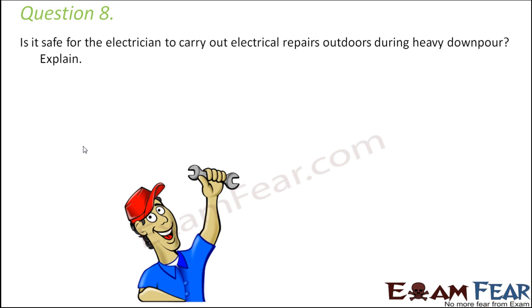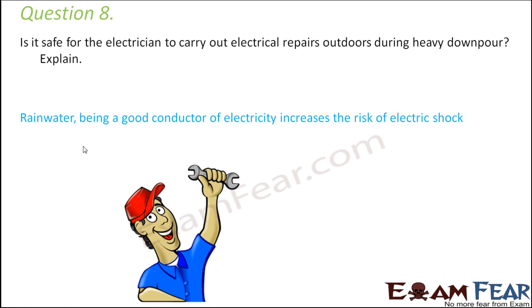Question number eight: is it safe for an electrician to carry out electrical repairs outdoors during heavy downpour? Heavy downpour means rainfall. Rain water is a good conductor of electricity because it contains a lot of dissolved salts. Since it is a good conductor, the chances of electric shock are greater if someone with wet hands or water comes near electric appliances.